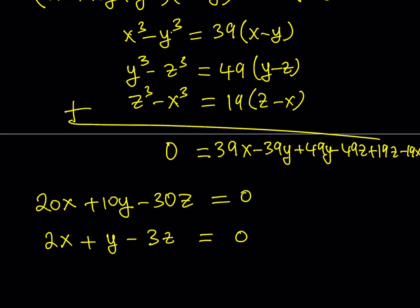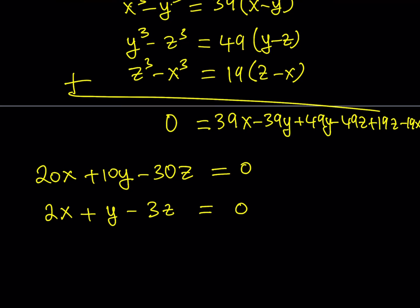So we get 2x plus y minus 3z is equal to zero. Now we can express one of the variables in terms of the others. I'd like to isolate y because it has coefficient 1, which makes it a bit easier — though you can isolate any variable. That gives y equals 3z minus 2x. This is my key — that will open the door.